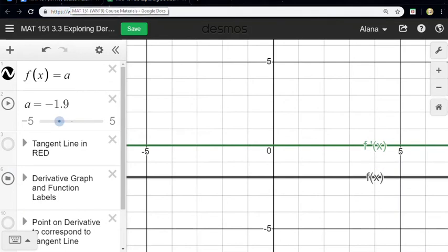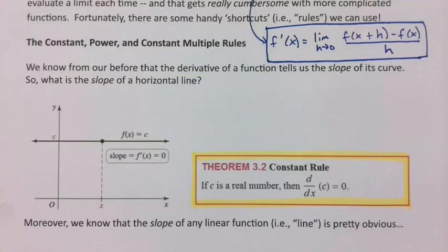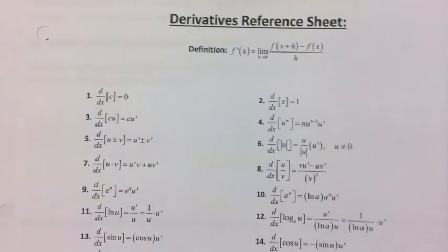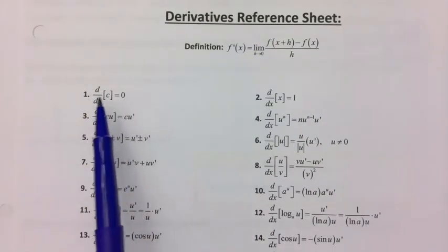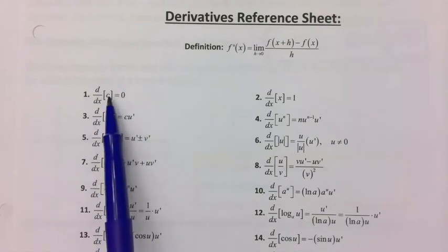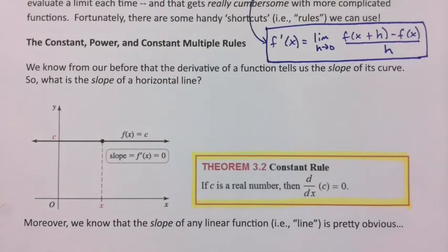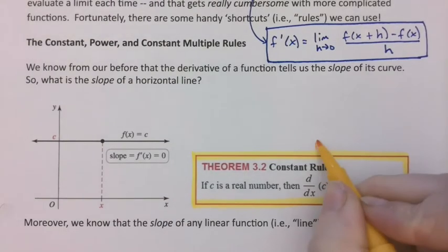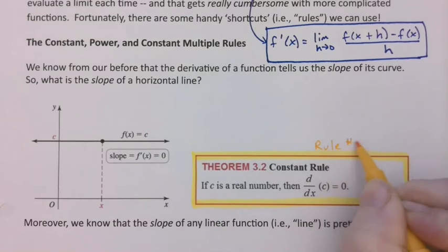A constant line is kind of a special case of a different function. So that's the constant rule, and it's the first rule on your derivative sheet. If I just pull that up real quick, you can see it's right here. It's rule number one. The derivative of a constant, d over dx, take the derivative of a constant and you get zero. This is rule number one on your sheet.